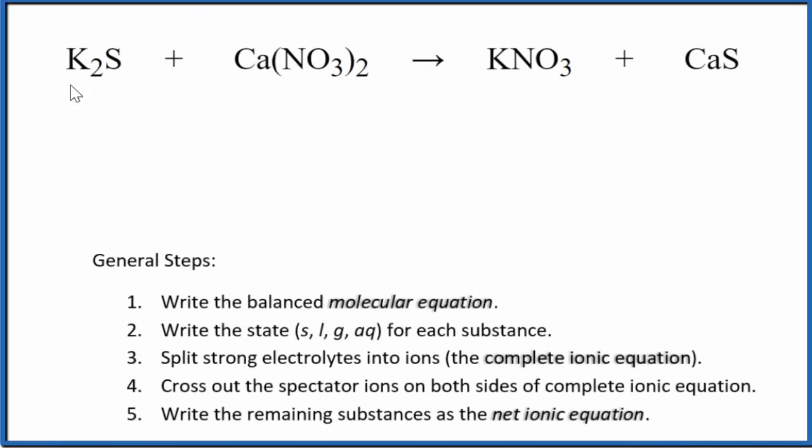Let's write the balanced net ionic equation for K2S plus Ca(NO3)2, potassium sulfide and calcium nitrate. So the first thing that we need to do with net ionic equations, we need to balance the molecular equation. This is our molecular equation.